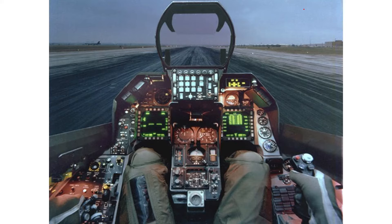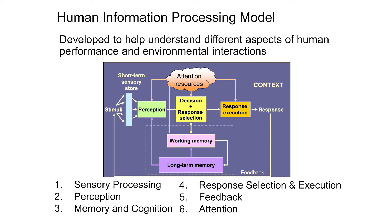Human information processing theory relates human cognition to that of a computer. We receive inputs through our senses, we process that information in our brain, and generate an appropriate output as a behavioral response. You can liken this to a computer, where your senses are the peripheral inputs like a webcam, microphone, mouse, and keyboard, the brain is the central processing unit, and the behavioral responses are output through the monitor and speakers.